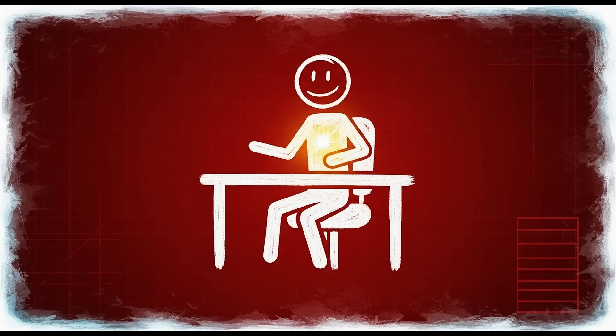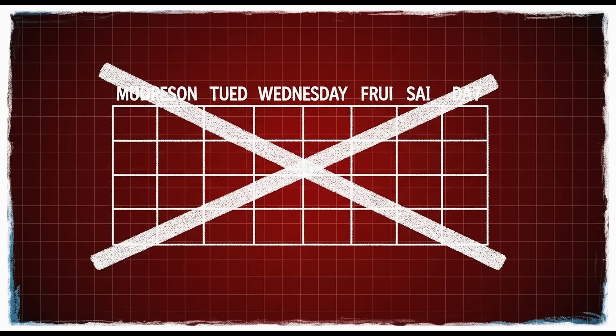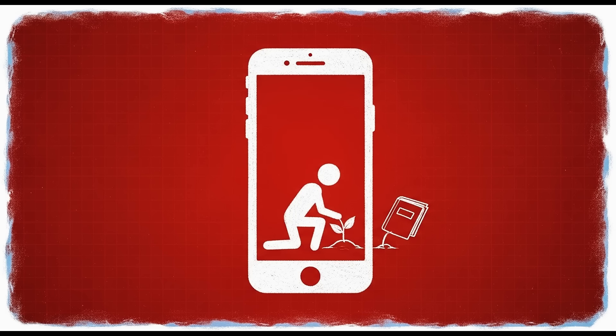This is about reclaiming agency over your own mind. Right now, if you're honest, you're not really in control. Your phone controls when you feel bored. Algorithms control what you think about. Apps control how you spend your time. That's not freedom. That's hijacking.